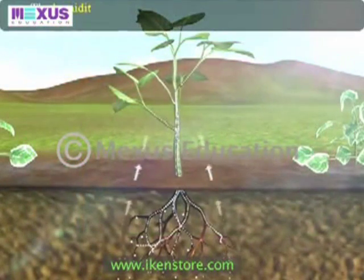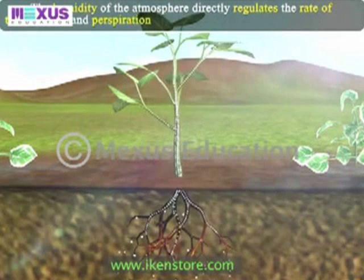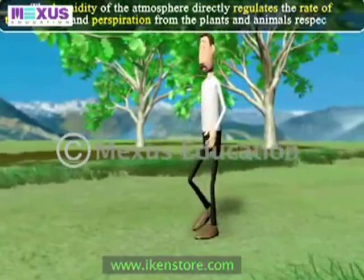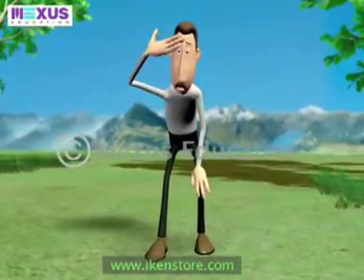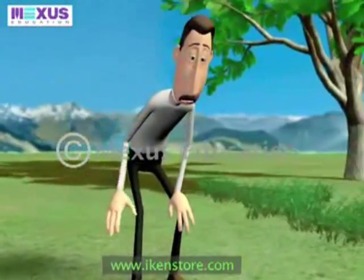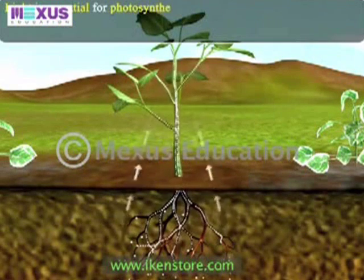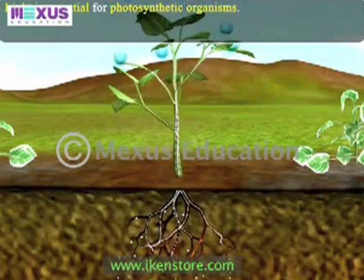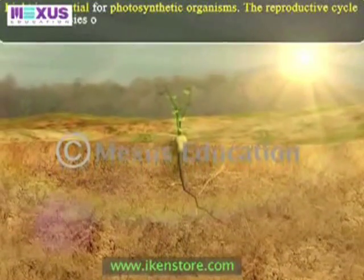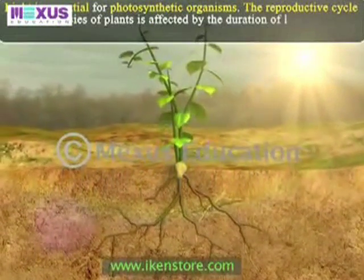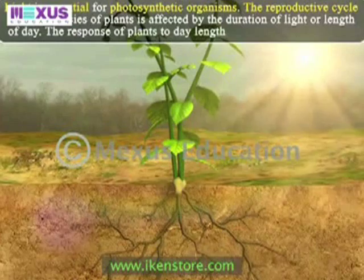The humidity of the atmosphere directly regulates the rate of transpiration and perspiration from plants and animals respectively. Various plants and animals develop several adaptations to face dry conditions. Light is also an essential abiotic factor for photosynthetic organisms for the preparation of food on which the whole living world depends. The reproductive cycle of many plant species is affected by the duration of light or length of day — the response of plants to day length is called photoperiodism.